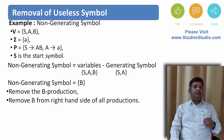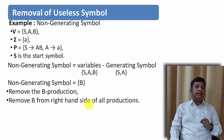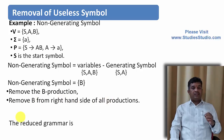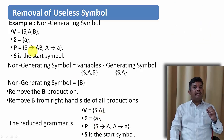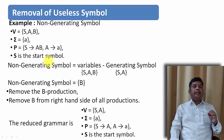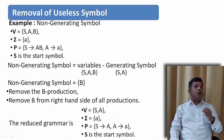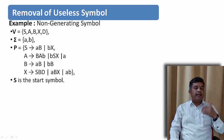As given by the formula, non-generating symbols equal variables minus generating symbols. The variables are S, A, and B, and the generating symbols are S and A. So, the non-generating symbol is B. To remove B, we remove B from the variable set and from the right-hand side of all productions. So S derives AB becomes S derives A. This is the reduced grammar after removing the non-generating symbol.